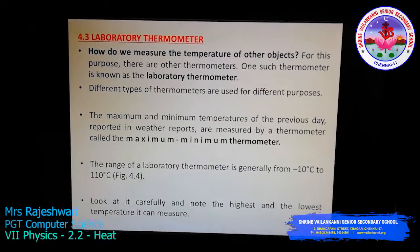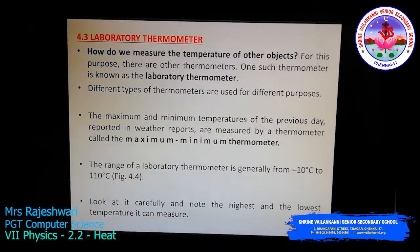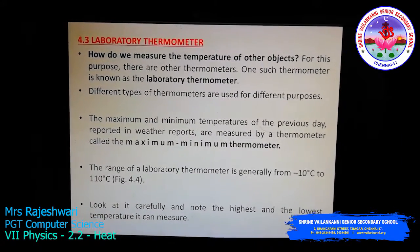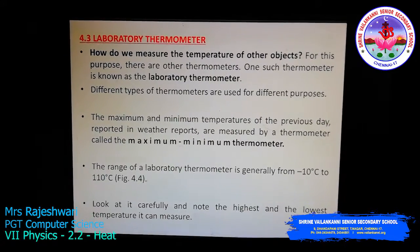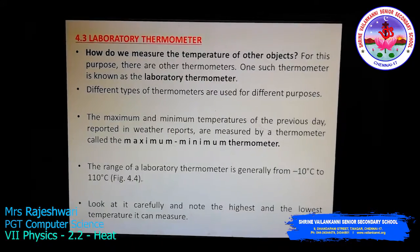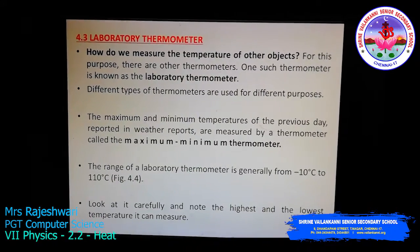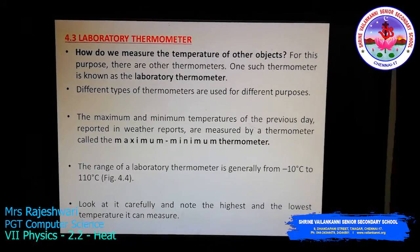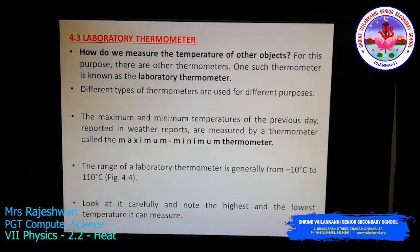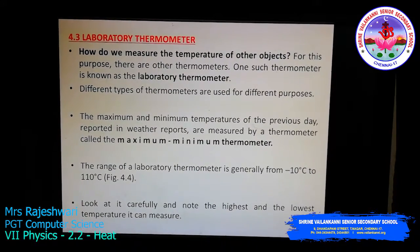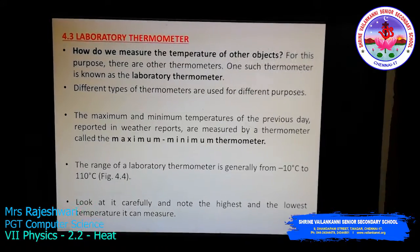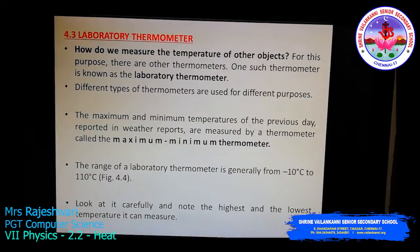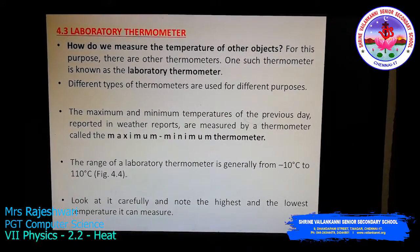Hello children. In today's class we are going to discuss about the laboratory thermometer. In the previous class we discussed about the clinical thermometer, which we use to measure only the temperature of a human body. You cannot measure the temperature of other objects with it because it may break. That is the reason we use a laboratory thermometer, which can measure the temperature of objects apart from the human body. There are many different types of thermometers available for various purposes.